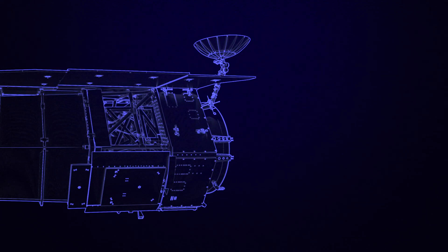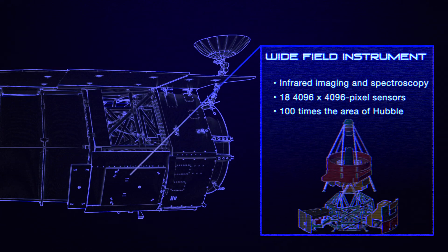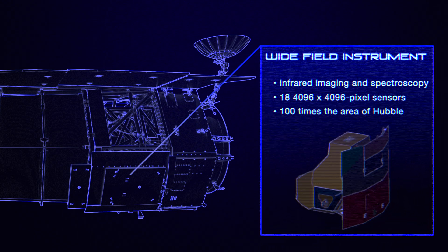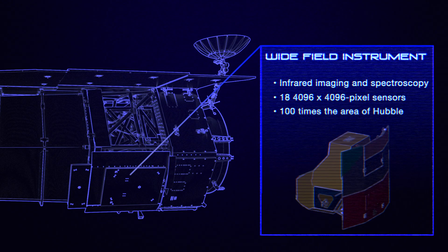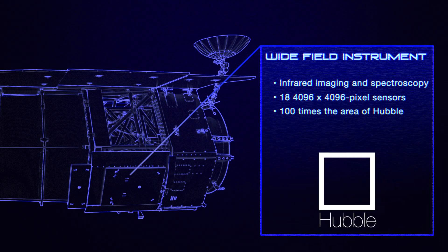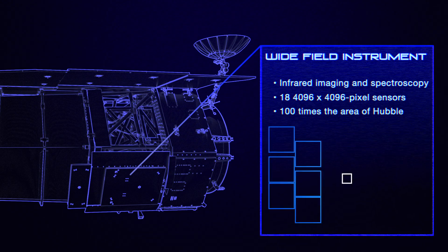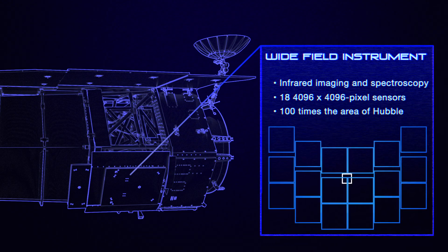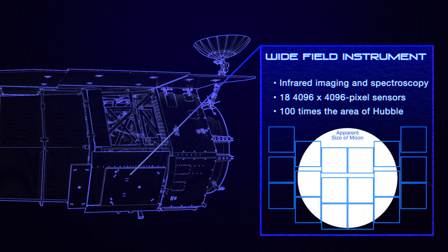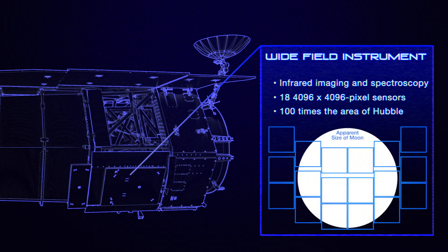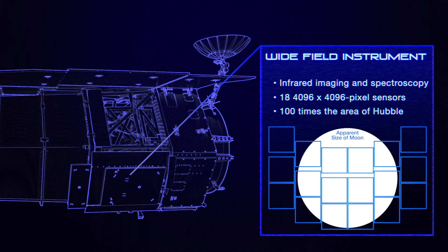WFIRST's main camera is the Wide Field Instrument, which will take infrared pictures of the sky to study dark energy, observe galaxies and stars, and find exoplanets. Instead of Hubble's single first-generation image sensor, the WFI incorporates 18 third-generation chips that allow it to take pictures capturing 100 times greater sky area than Hubble's. Each 300-megapixel image will enable scientists to study a large portion of the sky.